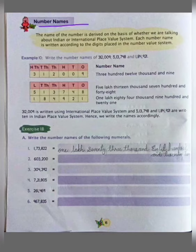The name of a number is derived on the basis of whether we are talking about the Indian or international place value system. Each number name is written according to the digits placed in the number value system.